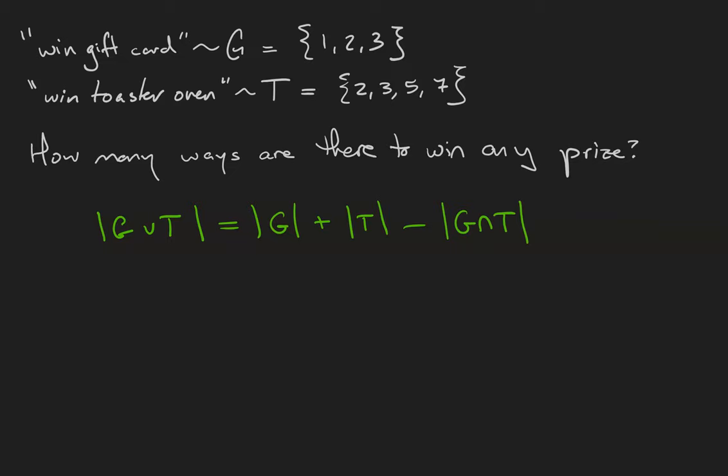G has three elements 1, 2, and 3. T has four elements, but that doesn't mean there's five ways that you can win because 2 and 3 are overlapping. So we have to subtract 2 and we get 5. There are five numbers in the lottery that will win you any prize at all.